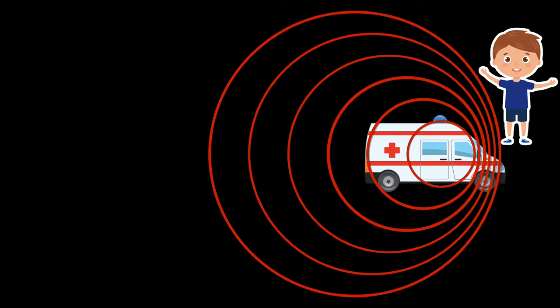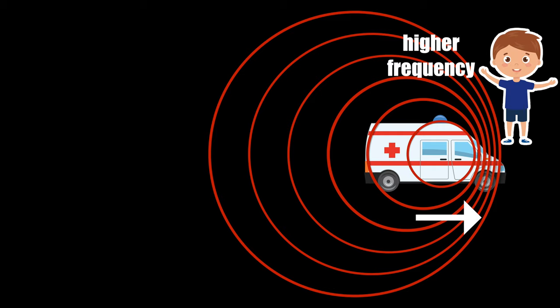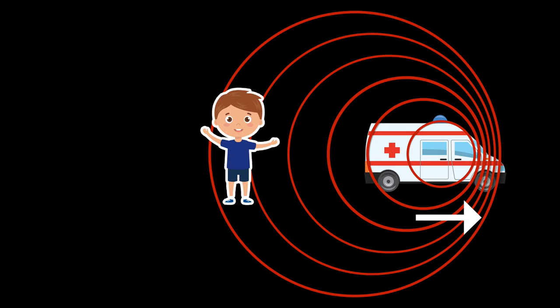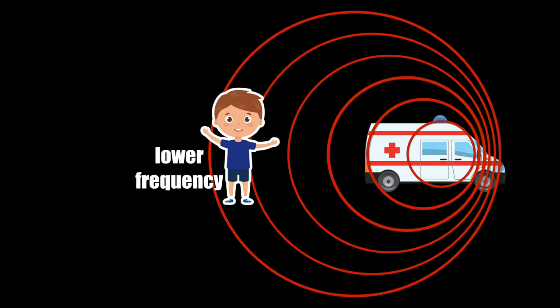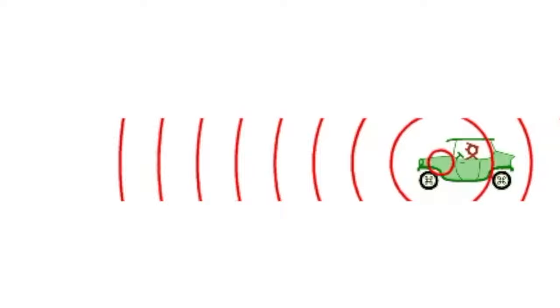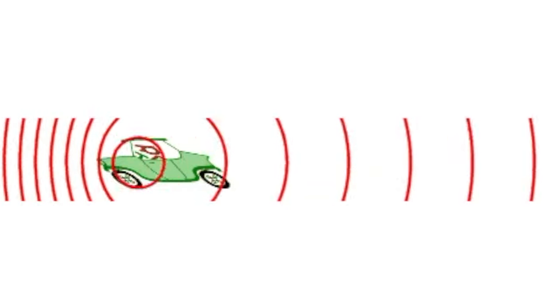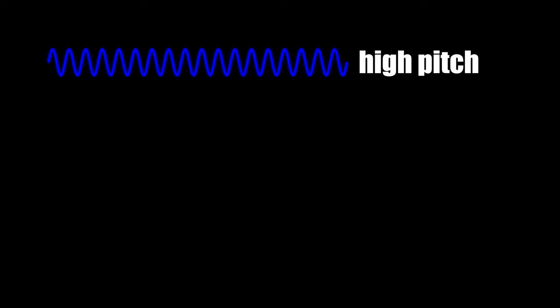A person standing in front of the moving source will observe a higher frequency than before as the source travels towards them. Conversely, someone behind the source will observe a lower frequency as the source travels away from it. The pitch we hear depends on the frequency of the sound wave — a high frequency corresponds to a high pitch, and a low frequency corresponds to a low pitch.